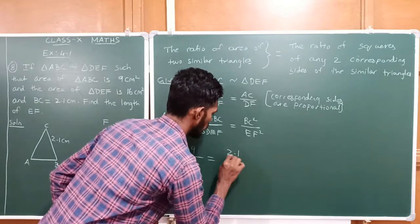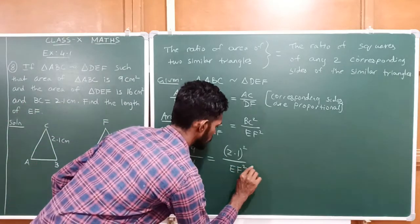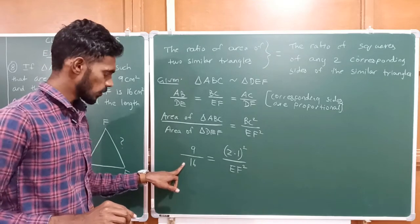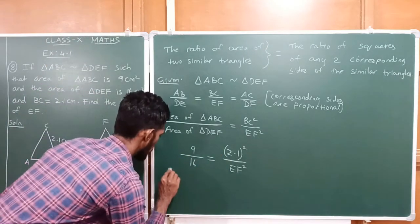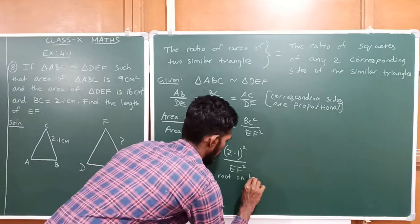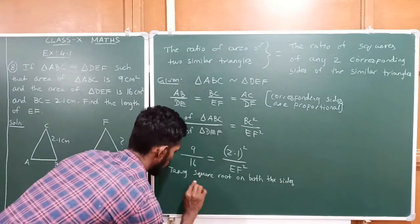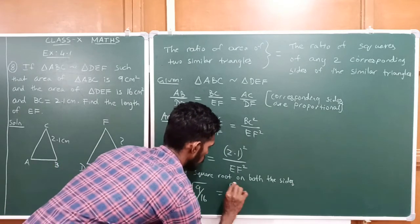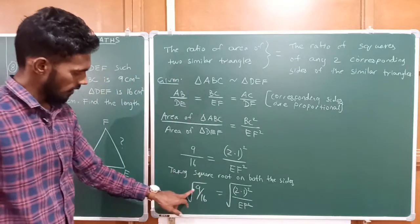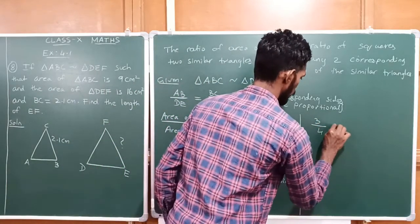Now taking square root on both sides: square root of 9 by 16 is equal to square root of 2.1 squared divided by EF squared. Square root of 9 is 3, square root of 16 is 4, so the left-hand side is 3 by 4. Applying the square root to the numerator, the square and square root cancel, giving 2.1 divided by EF.